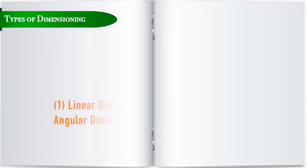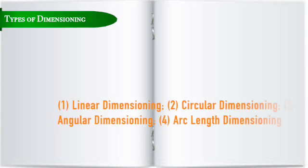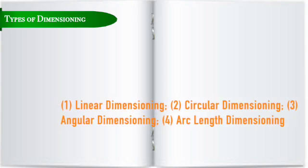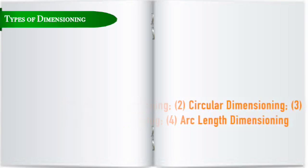Let us now discuss the following types of dimensioning in a drawing: 1. Linear dimensioning. 2. Circular dimensioning. 3. Angular dimensioning. 4. Arc length dimensioning.